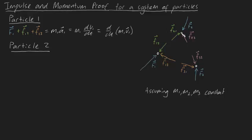Well, we know that the sum of forces acting on our particle is equal to Ma, so that means that F2 plus F21 plus F23 is going to be equal to M2 A2. And we can do exactly what we did above, and we can now write this as d/dt of M2 V2, like this.